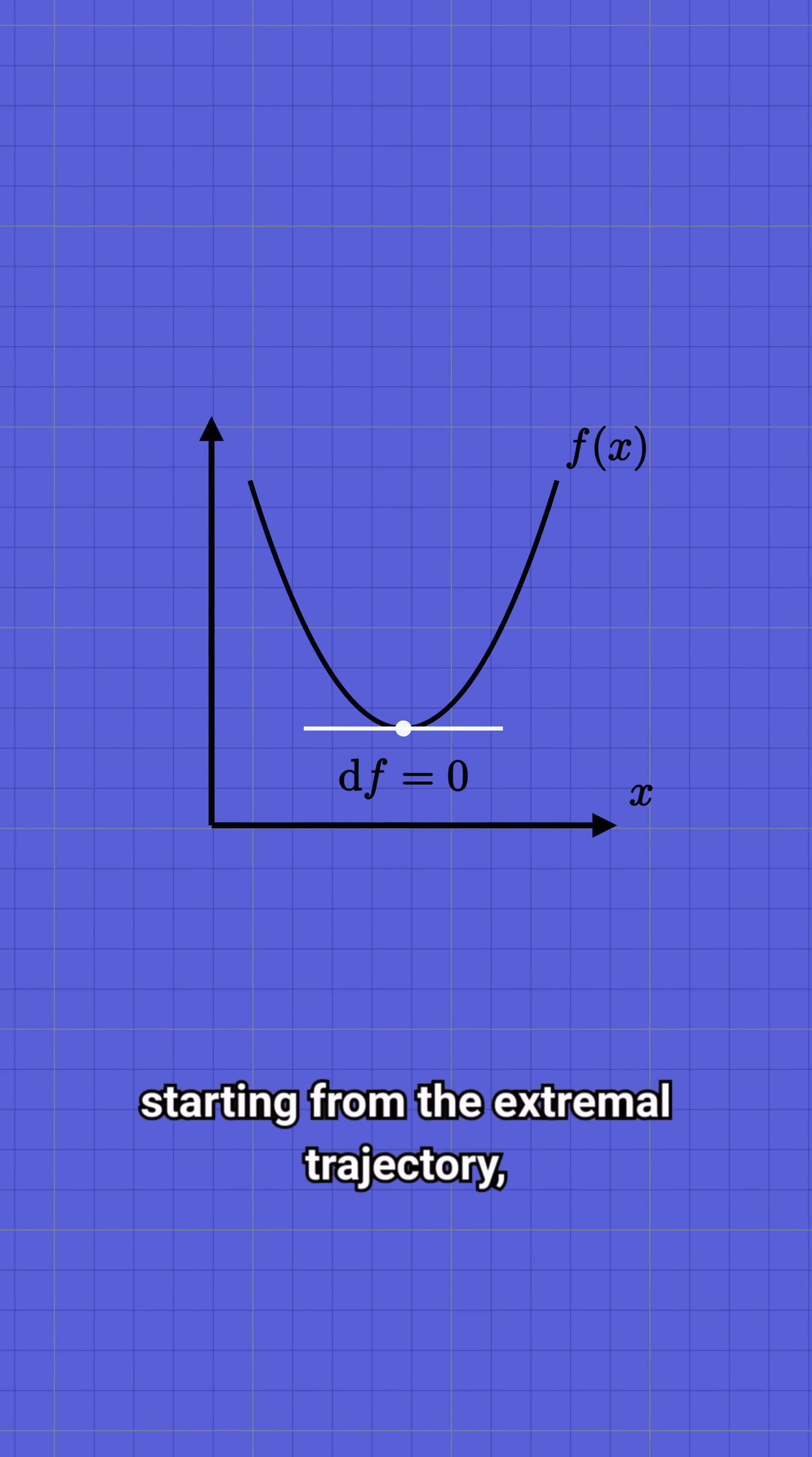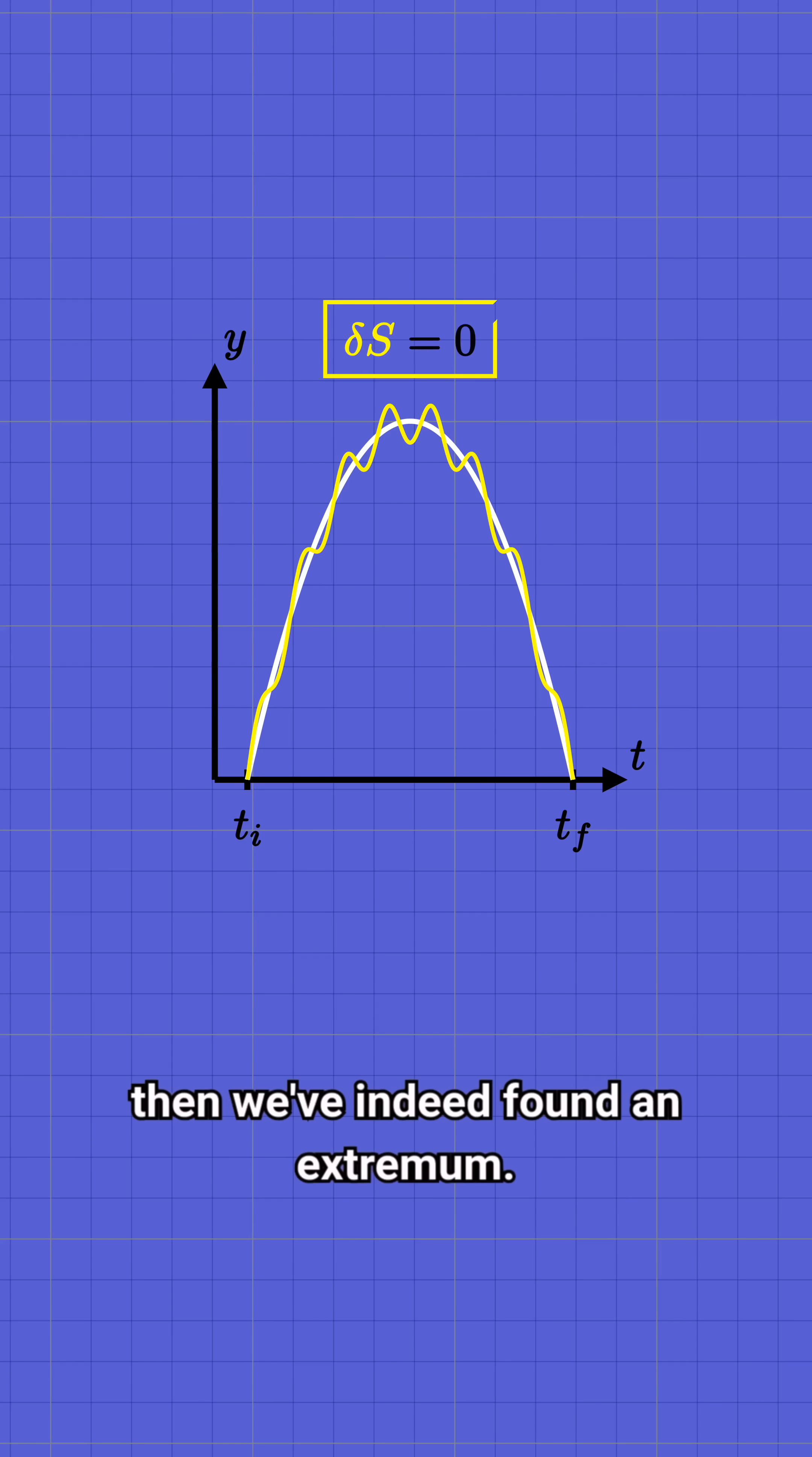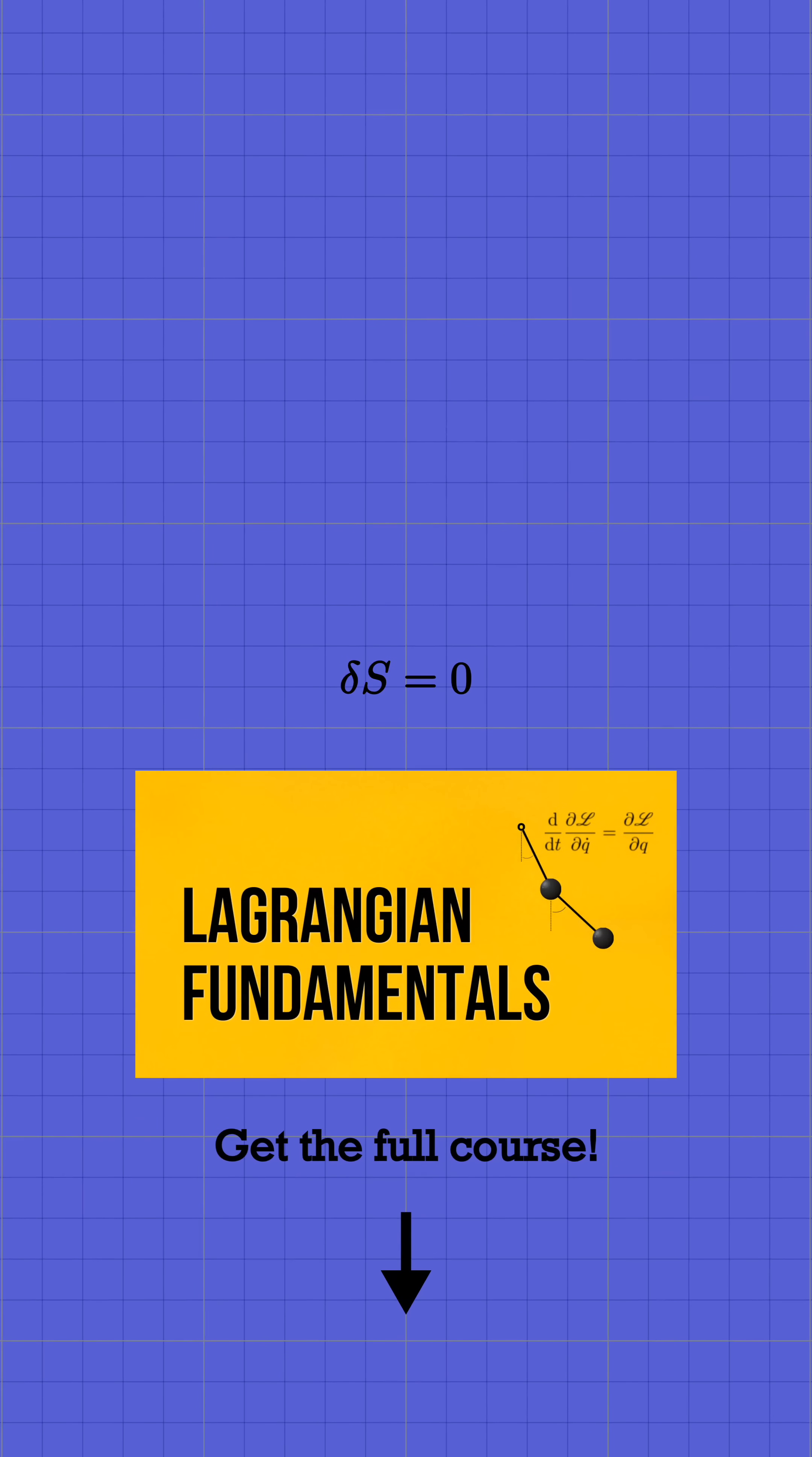In the same way, starting from the extremal trajectory, we can imagine making small variations of it by deforming the shape of the curve by a tiny bit. If the value of the action doesn't change when we do so, then we've indeed found an extremum. And that's the actual trajectory that the particle follows. δS = 0.